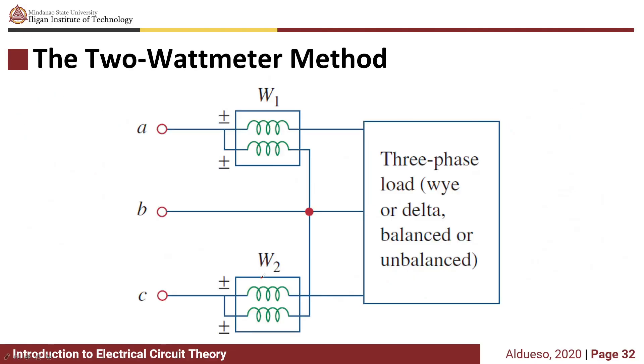This method is called the two-wattmeter method. This is the most commonly used method in measuring three-phase power because the neutral line is not always accessible.